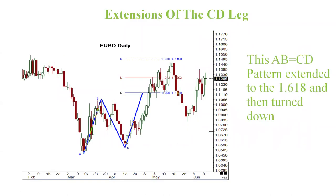Here's another example using the euro, with more of an extension on the C to D leg up to the 1.618. Notice how it did get to the D1.27 and got a bit of retracement — if we did a retracement from that low to high, it would be about a 0.382. Then it continues up and makes another smaller ABCD up into the D1.618, into a resistance area, and a larger retracement occurs from that.